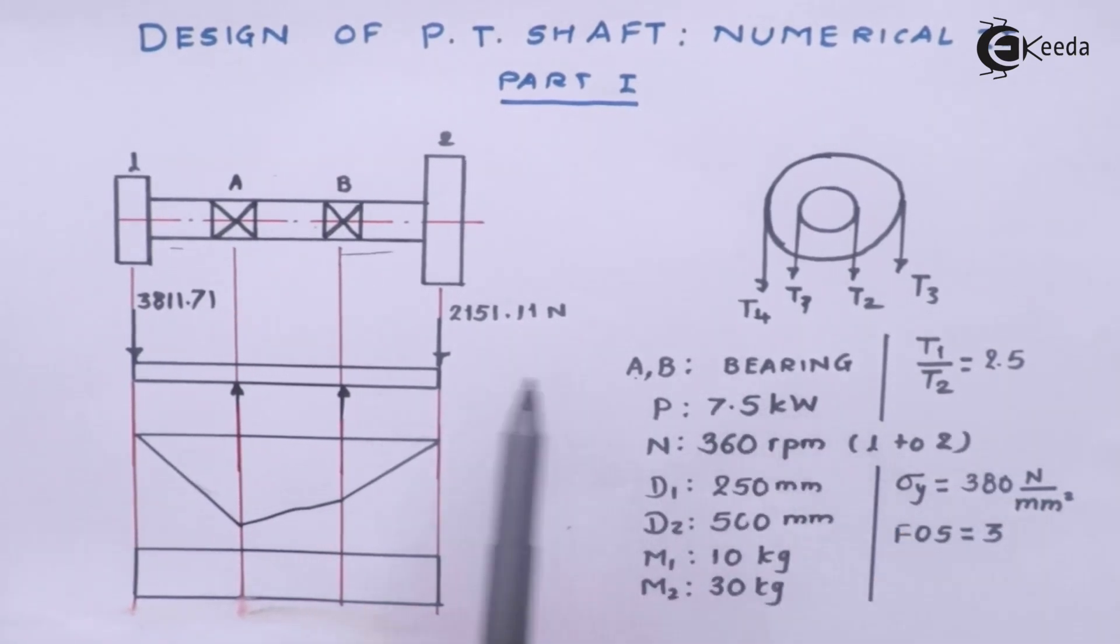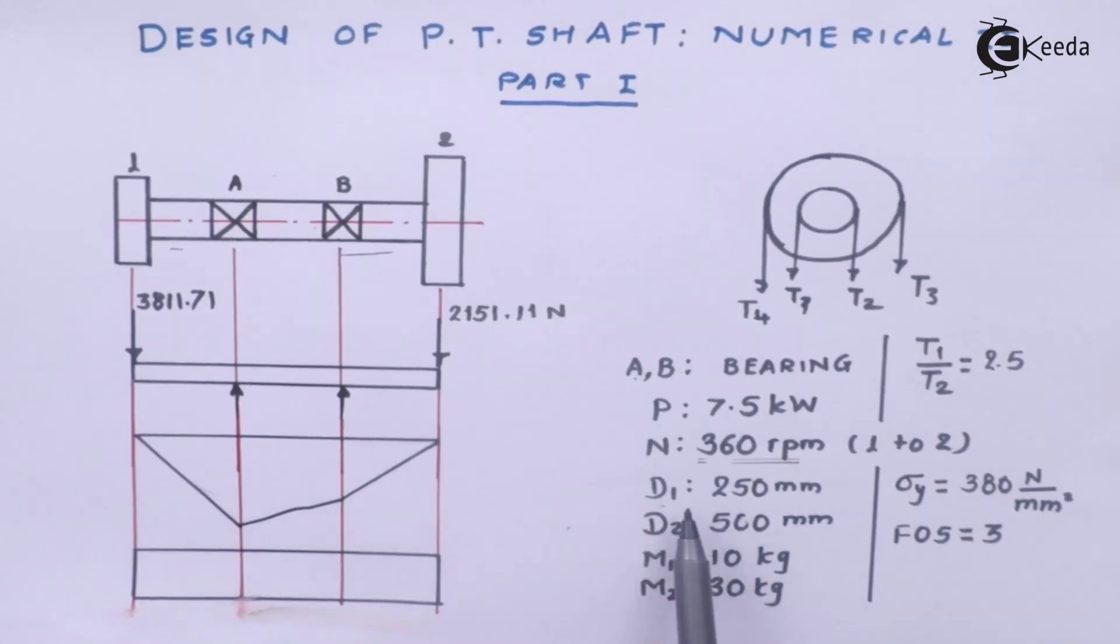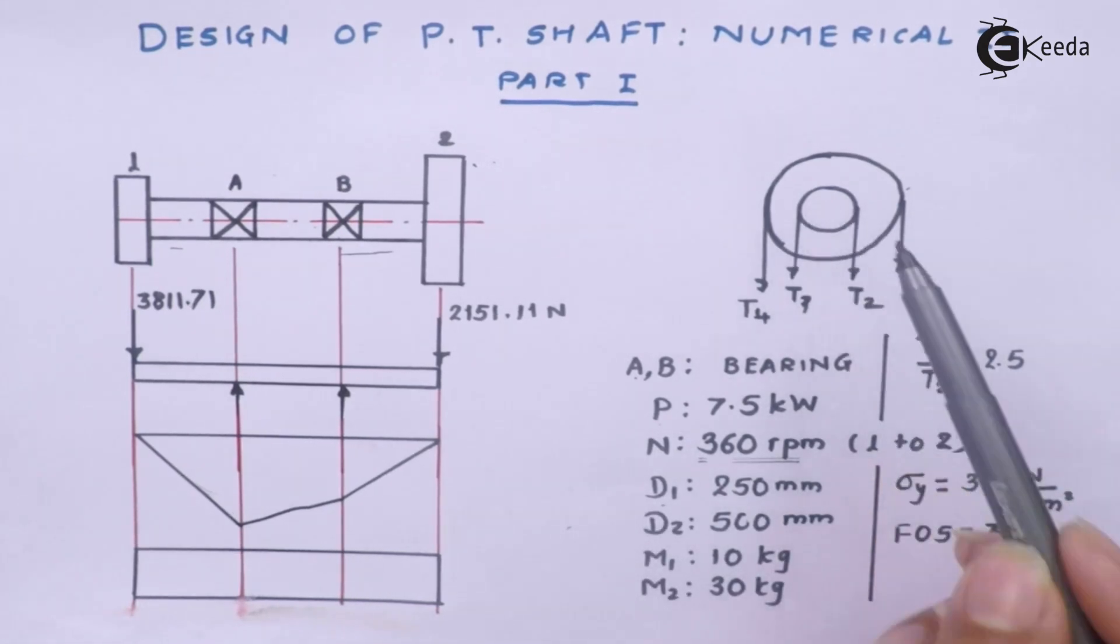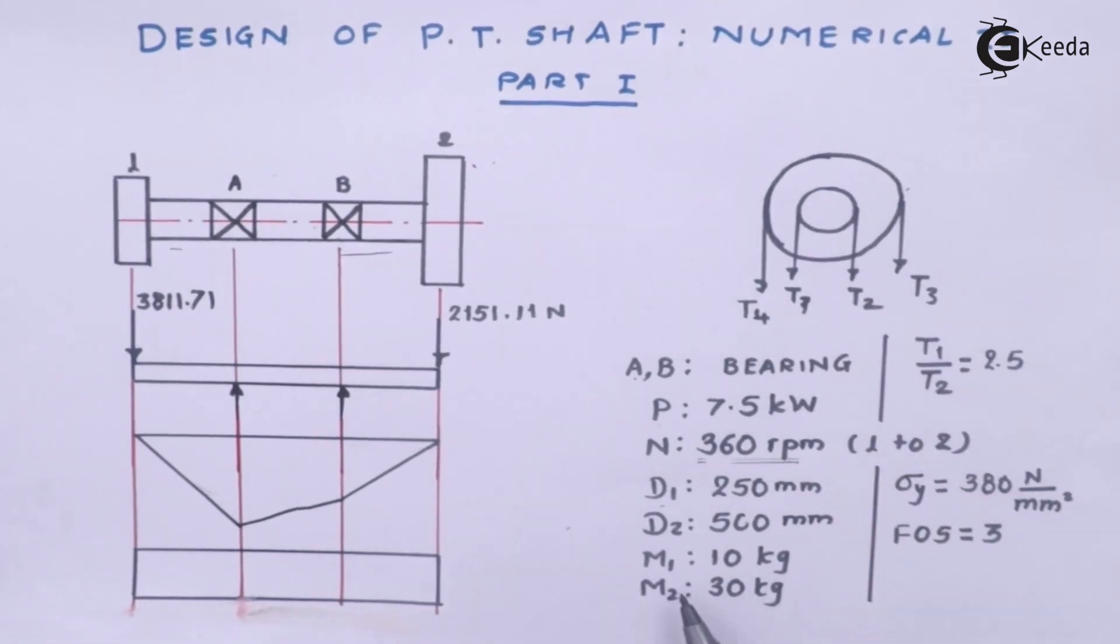They have said A and B are bearings. Power transmission should be of 7.5 kilowatt. The rotational speed we have been given is 360 RPM. Of course this rotation speed is of the shaft. Then the diameter of the first pulley, the larger pulley, which is pulley number 2 has been given 500 millimeter. And the diameter of this smaller pulley is given 250 millimeter. We have been given the weights of pulleys also. It's 10 kg and 30 kg respectively.